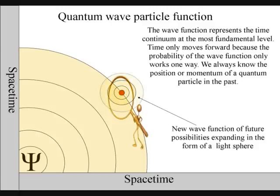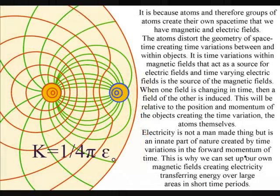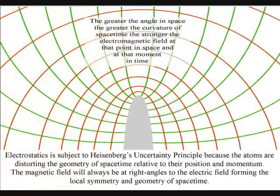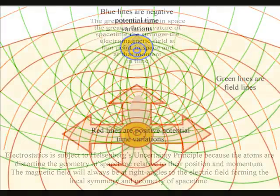This forms the continuous flow of electric charge and electrical potential within the movement of electromagnetic fields. The electric fields will always be at right angles to the magnetic fields, forming a local space-time geometry.